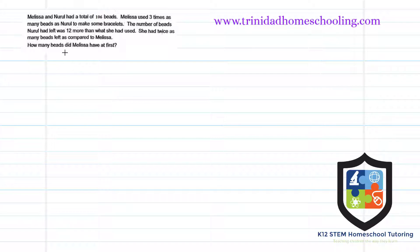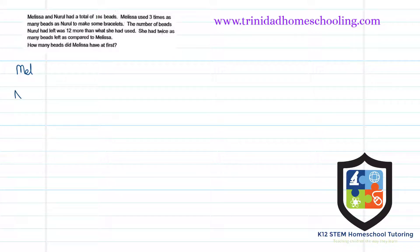Let's take it line by line and write down exactly what they want. This is another example of unequal sharing — where one person gets more than the other out of some total amount. We're talking about beads that were used and beads that were left. So let's write down Melissa — we'll use 'mel' for Melissa — and Neural — we'll use 'neu' for Neural.